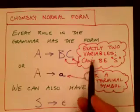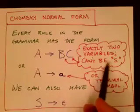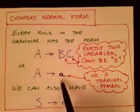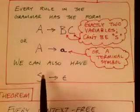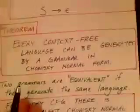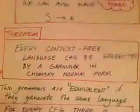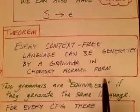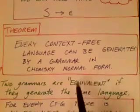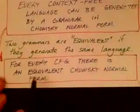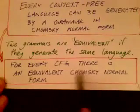Furthermore, we have a constraint that S can only appear on the left-hand side of rules, and we don't have any epsilons, except we are allowed to have the rule S goes to epsilon. It turns out that every context-free language can be generated by a grammar in Chomsky normal form — in other words, for every context-free grammar, there is an equivalent grammar in Chomsky normal form.